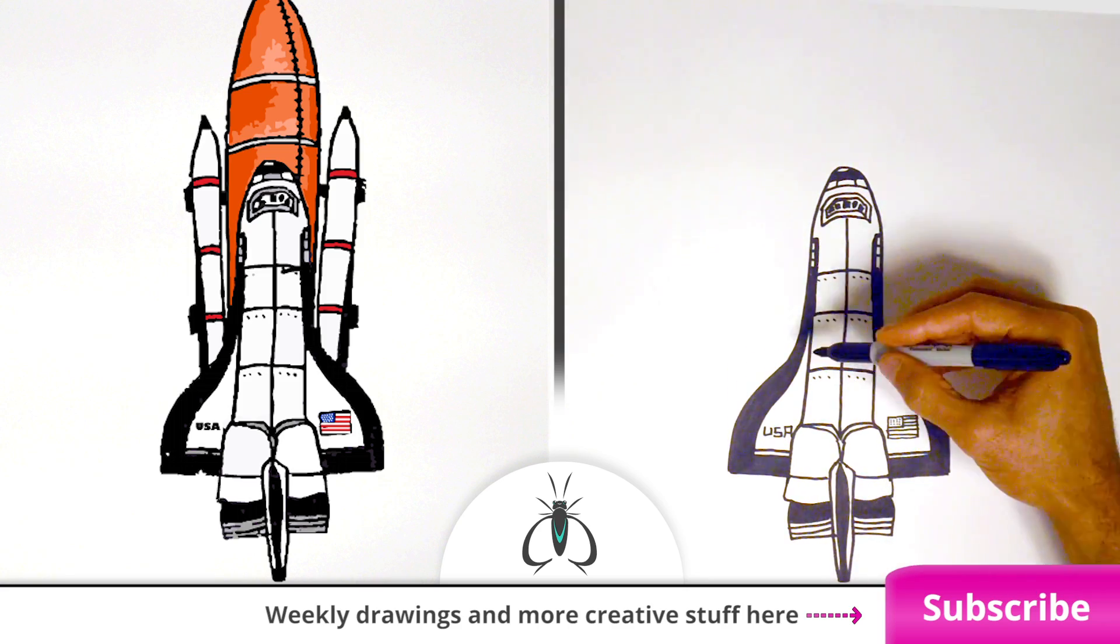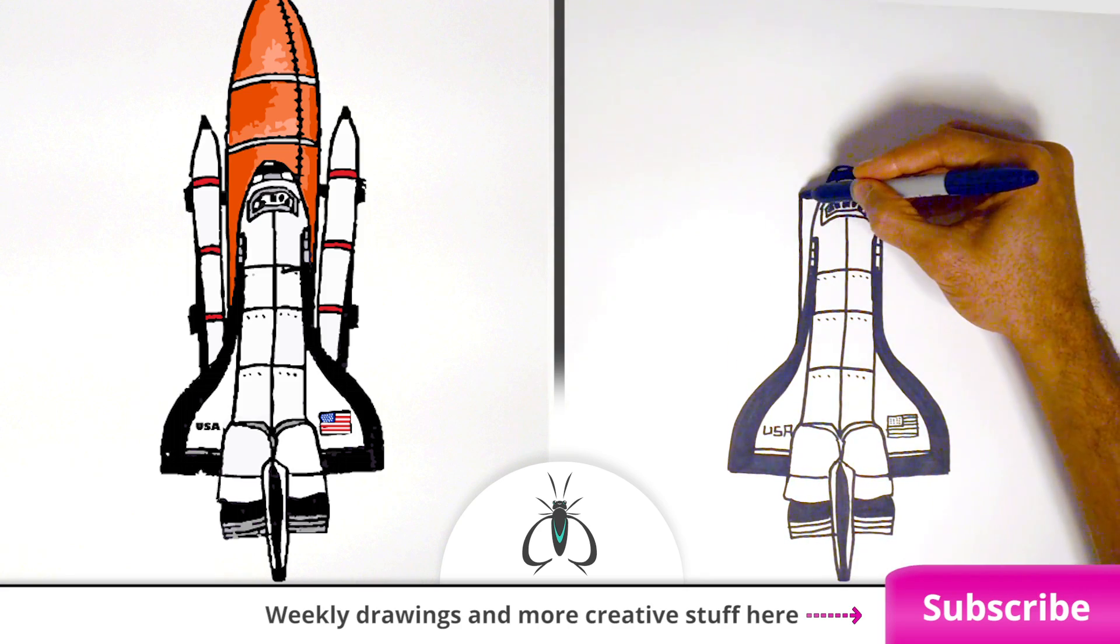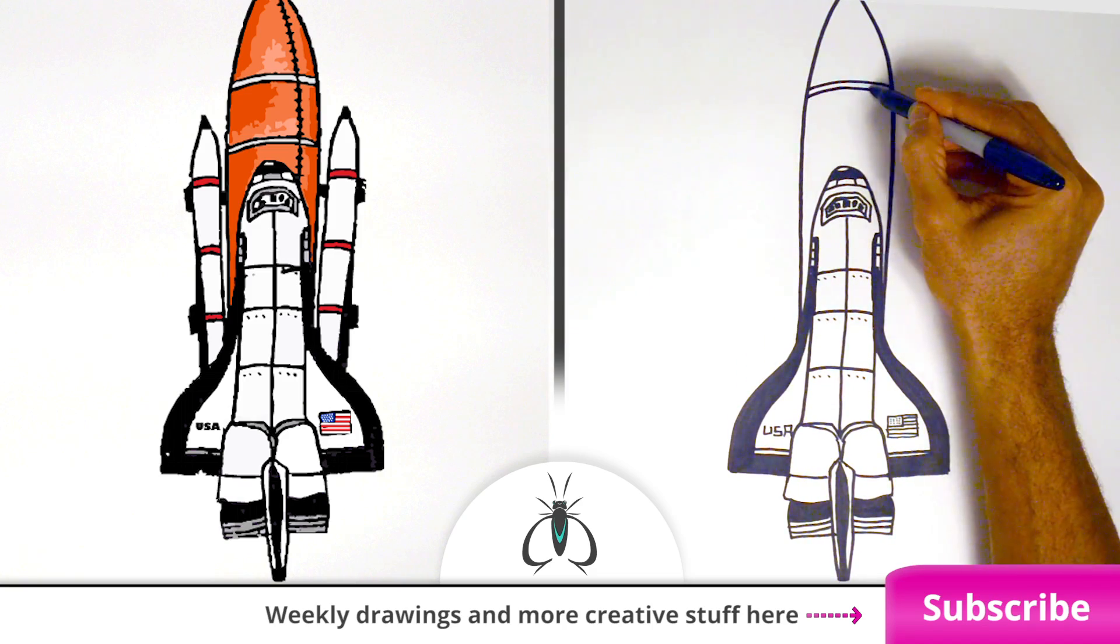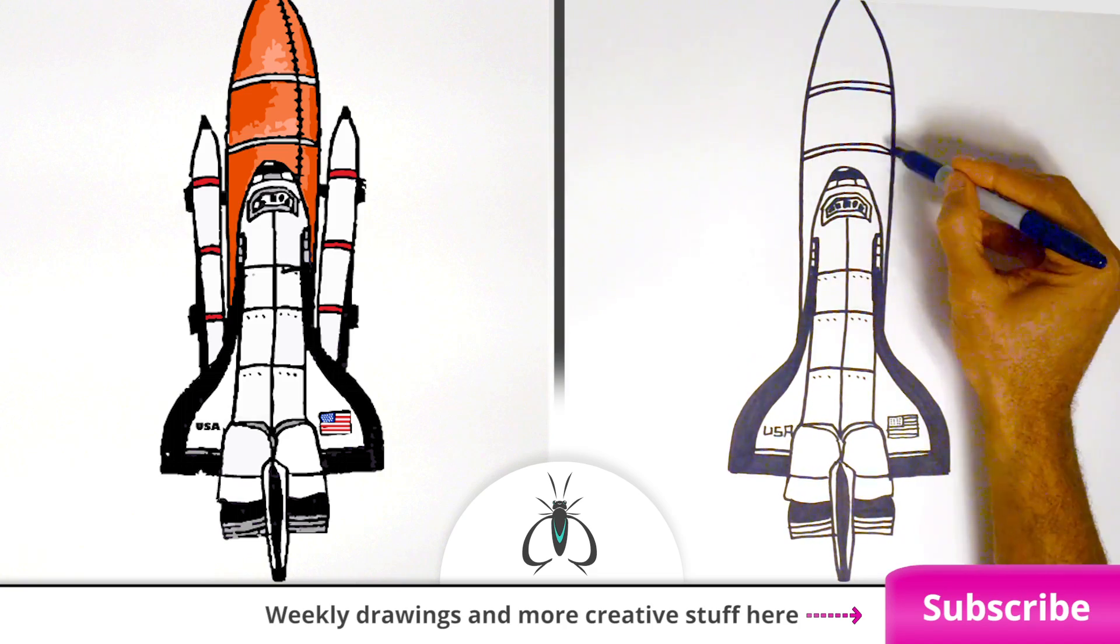Next, let's add that huge external tank. This tank fuels the orbiter's main engines during the launch. So it's kind of like a big gas tank.